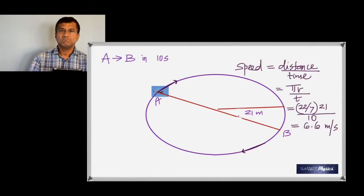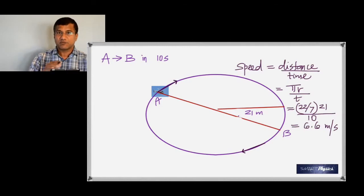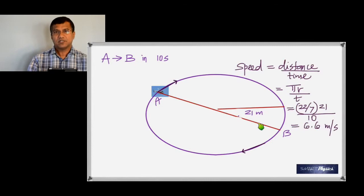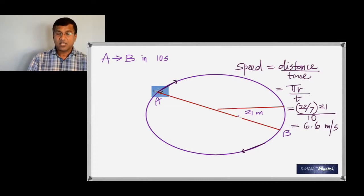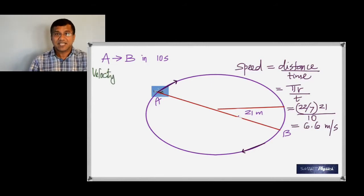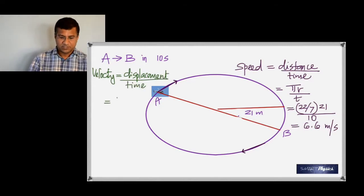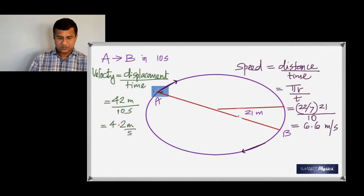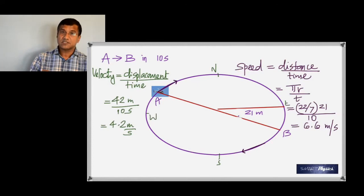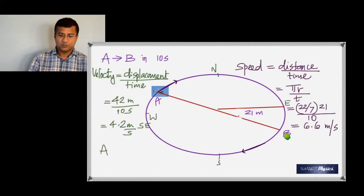To find the velocity, you need the displacement — measured in a straight line from A to B — which is the diameter of the circle: 42 meters. So velocity is 42 meters divided by 10 seconds, which equals 4.2 meters per second. Labeling the diagram with compass directions, the direction is southeast, so velocity is 4.2 meters per second to the southeast.